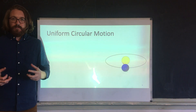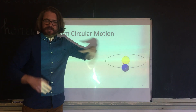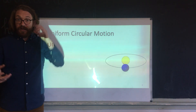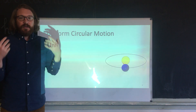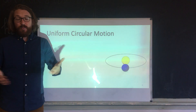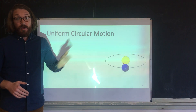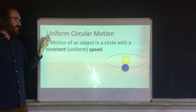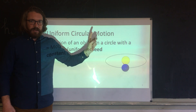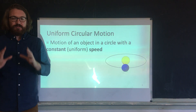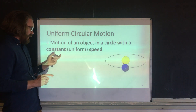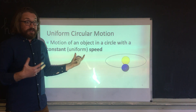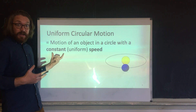What we're talking about today is called uniform circular motion. We see it in tons of places — planets orbiting suns, moons orbiting planets, anything spinning. The definition: it is the motion of an object that has a constant speed but is moving in a circle. 'Uniform' means constant — the same for everybody.